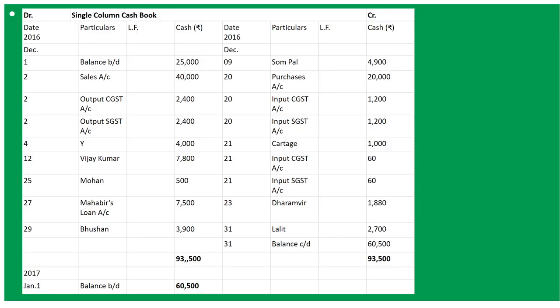Next: paid to Dharambeer and discount allowed by him. On 23rd, 'By Dharambeer Account' 1,880. Discount allowed will be shown in the working notes.